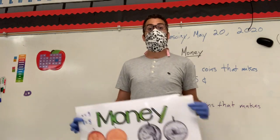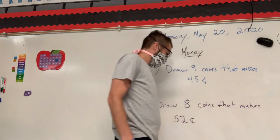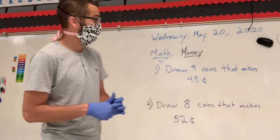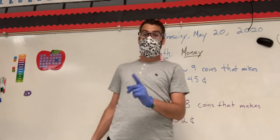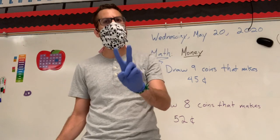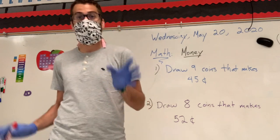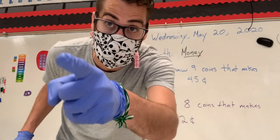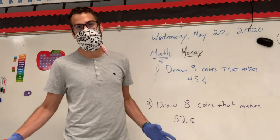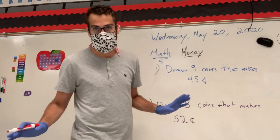Let's continue with the class. Now, if we remember from today, we have to draw nine coins that make 45 cents, and there are two different ways to do that. Let's do both of those ways and see if those are the same ones that you did. First I'm going to do the easiest one — I think it's all about nickels.